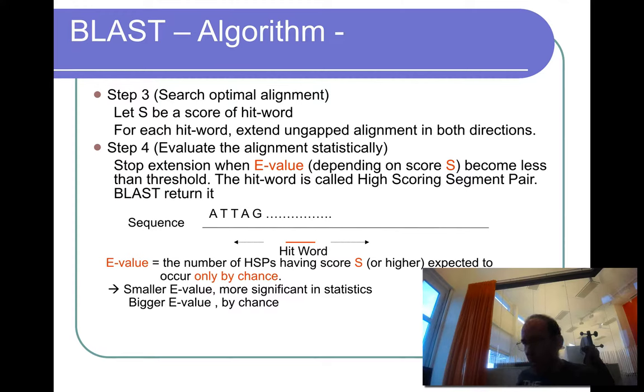Third, and then you try to extend these ungapped alignments in both directions by just walking over the diagonal until you find, until the score drops below instead of the cutoff. And finally, you evaluate if this alignment is significant or not using the E-value. This is something we'll discuss later.